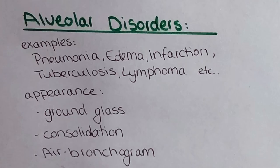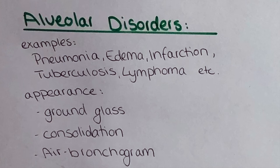Alveolar diseases are for example pneumonia, edema, infarction, tuberculosis, lymphoma, and many more. They usually appear with a ground glass appearance, meaning that the entire lung field — or sometimes just a lobular area — will be more opaque, so more white, looking like ground glass or milk glass. Then consolidation can be visible, where one lobe or the entire lung is more densely white than in the ground glass appearance. In the air bronchogram, the bronchi are more visible due to the air being highlighted inside and outside the bronchi.